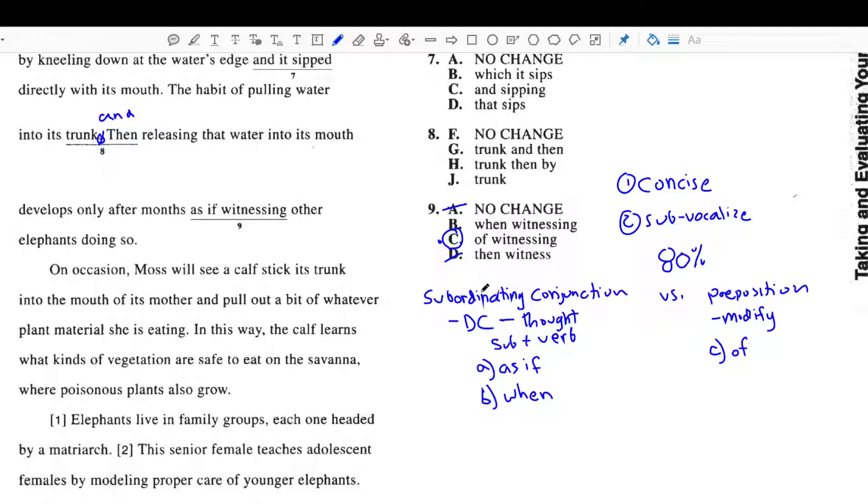So, this really is a question of starting a new thought versus modifying an original thought. And, we use prepositional phrases to modify original thoughts. And, we use subordinating conjunctions to start new thoughts. Even though the thought is an incomplete thought, it's a dependent clause. It can't stand alone. It requires an independent clause. It's still a new thought.